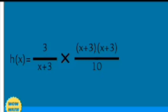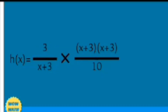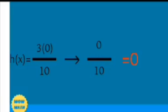Since there are common factors, we cancel them. What remains is 3 times x plus 3 over 10. Now we substitute the limit value, which is negative 3, into x. This becomes 3 times negative 3 plus 3 over 10. Solving the numerator gives 0 over 10. Dividing gives 0. So to get the limit of f of x equals 0 as x approaches negative 3, we use multiplication.